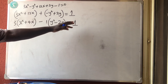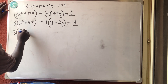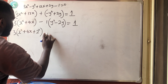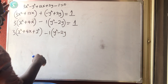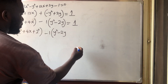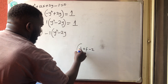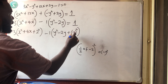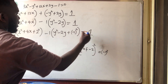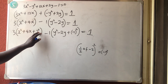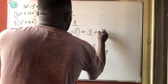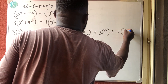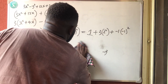Completing the square: find half the coefficient of x and square it, then add to both sides. Half of 4 is 2, so we add 2² = 4. For the y terms: half of −2 is −1, square it gives (−1)² = 1. Add both to both sides. On the right-hand side, remember we still have the open brackets, so we add 3 × 2² for x and −1 × (−1)² for y.